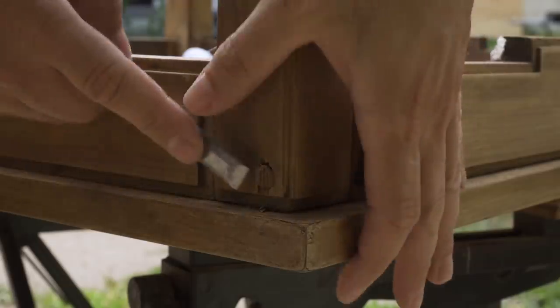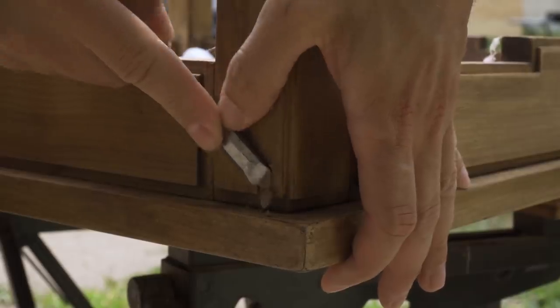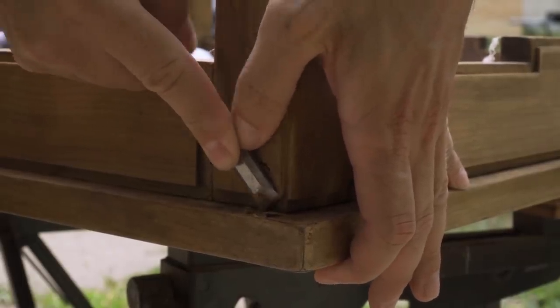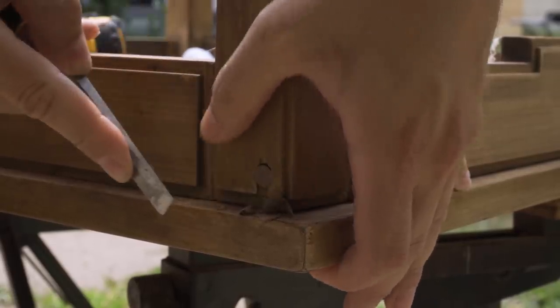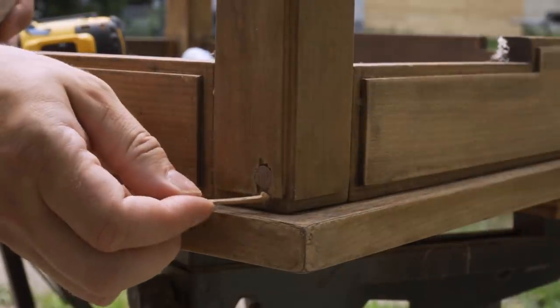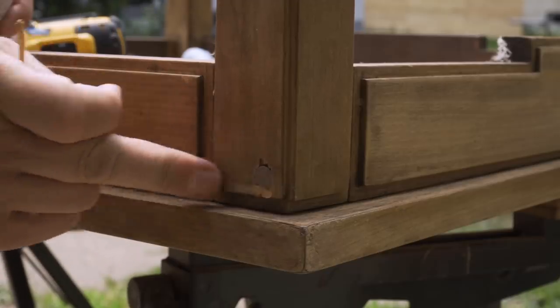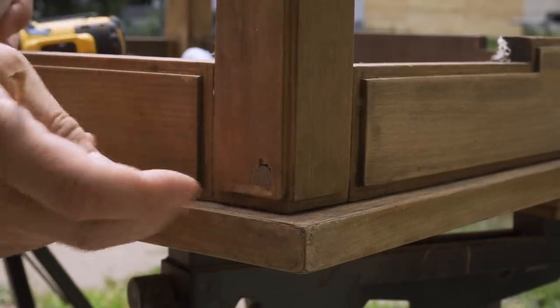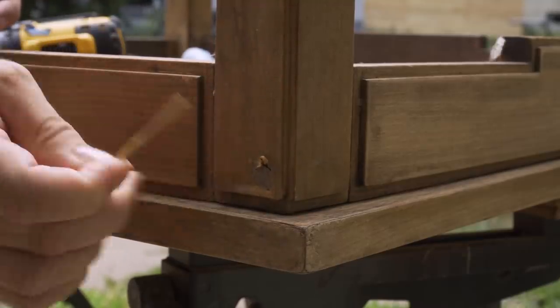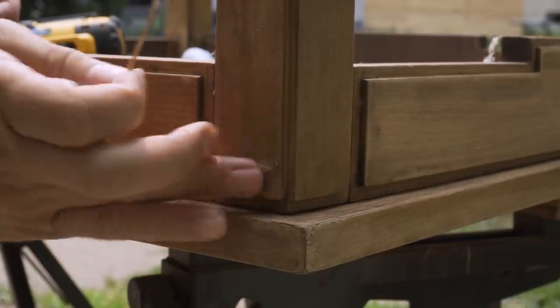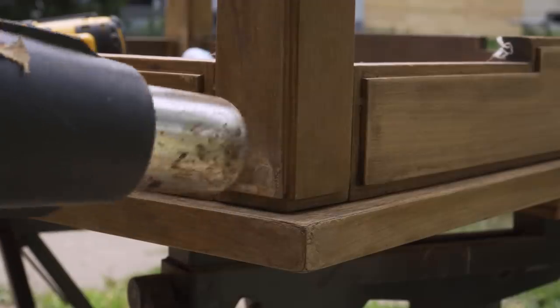Once the glue was dry then I trimmed the plug with a chisel. There was some tear out around the hole, and I filled that with some wood filler. This filler also does not match the wood of the table. It's lighter. But I knew I could touch it up later on so that it was a closer match and wouldn't be that noticeable.